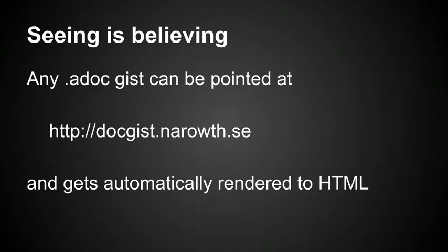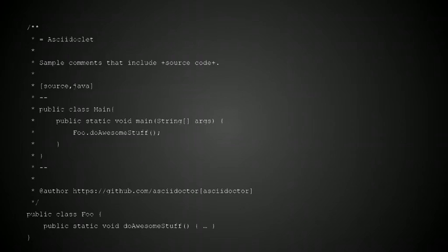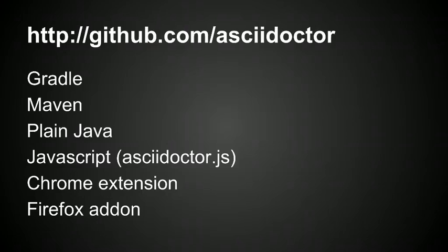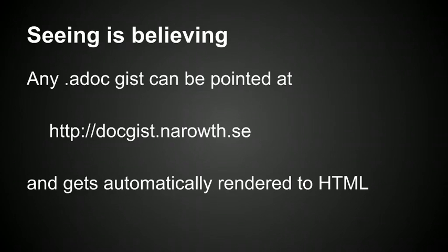There is another person in the AsciiDoctor community who has created a website at gist.asciidoctor.org — he's from Sweden. You can point any Gist that contains AsciiDoctor sources to this site and it will be rendered with the default settings. This is how I rendered the snapshot I presented here — I just took a screenshot and pasted it into the presentation. So if you just want to give it a quick try without installing anything on Chrome or Firefox, just go to this place and start fiddling around with the syntax.